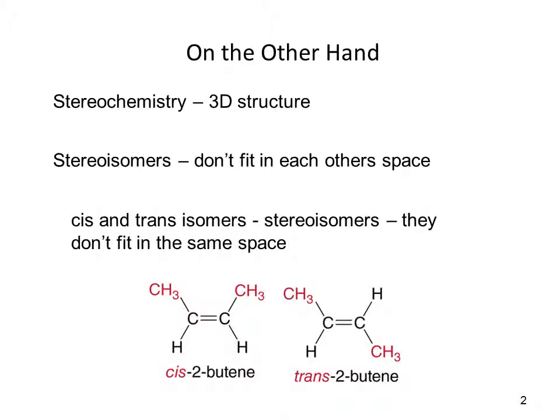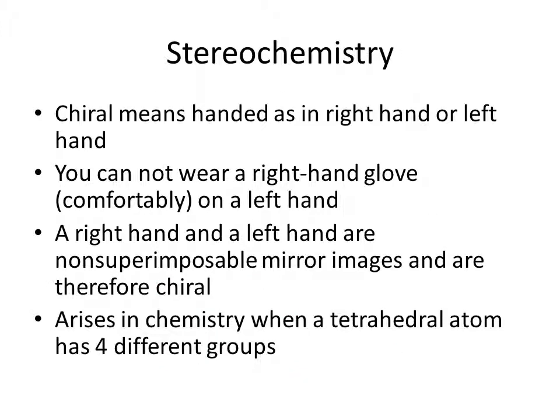We're going to look at another type of stereoisomer based on something called chirality. In this stereochemistry, we're going to look at chiral carbons. Chiral means handed, just as you have a right hand or a left hand, and your right hand is different from your left hand. If you were to cut off your right hand and put it in place of your left hand, you would look at it and say that's not right. You know that you can take a right-handed glove and put it on your left hand, but it doesn't fit.